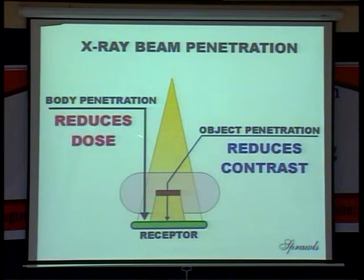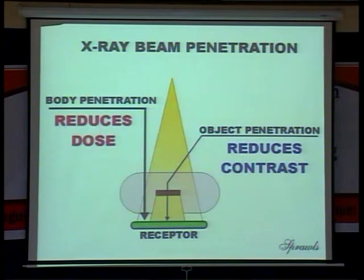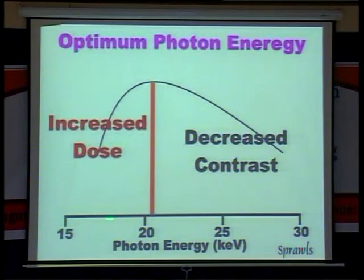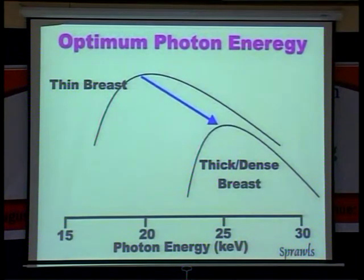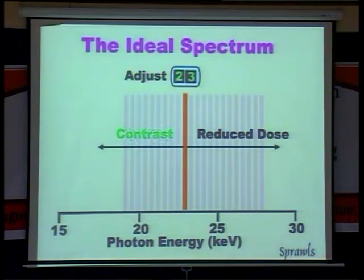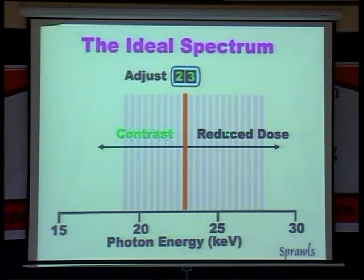Beam penetration also plays a role. Object penetration will have a reduced dose, but scattering reduces the contrast. When photon energy is between 15 to 20 keV, there is an increased dose; whereas when it goes to 20 to 30 keV, the contrast decreases. For thick and thin breast, the ideal spectrum will be between 15 to 23 keV for good contrast — but the dose reduction should also be achieved. That is why you expose between 24 to 30 kV photon energy.